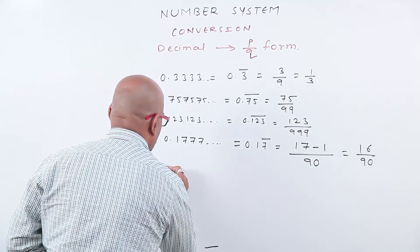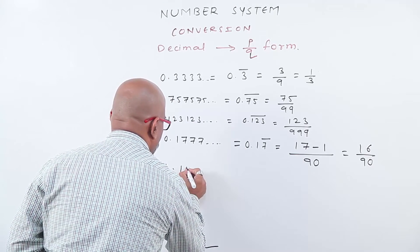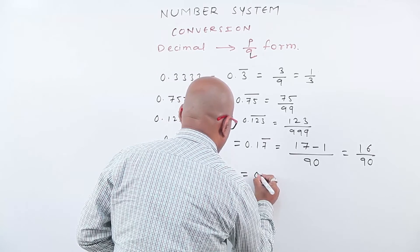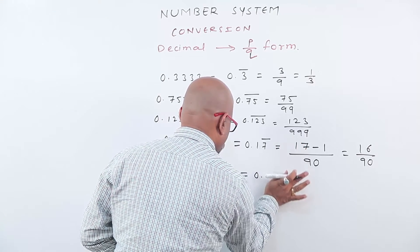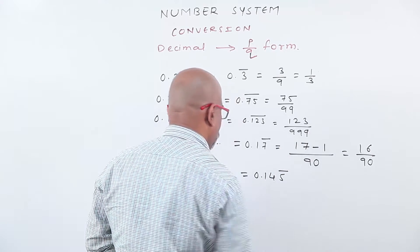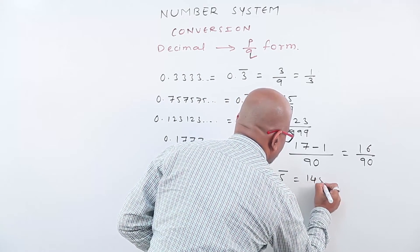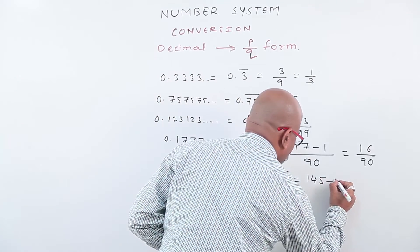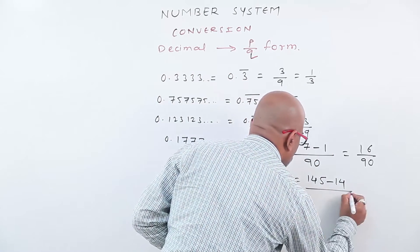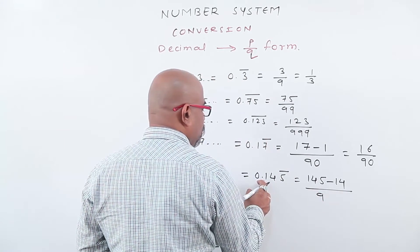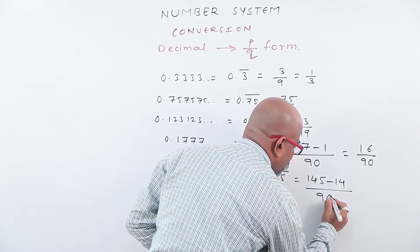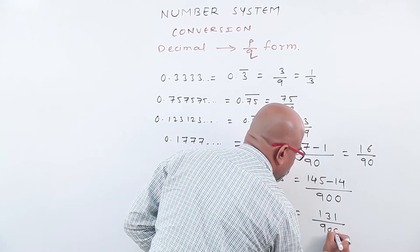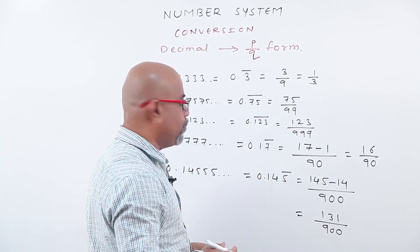Next example: 0.14555 and so on. Writing in reduced form: 0.145 bar — I put a bar on 5. First I write 145 as it is. Here, 1 and 4 are non-recurring numbers, therefore subtract 14. Only one number is recurring, so I put 9. Two numbers are non-recurring, so for those we put two zeros. The answer is 145 minus 14, which is 131, upon 900. So 131 upon 900 is the p by q form of 0.14555.